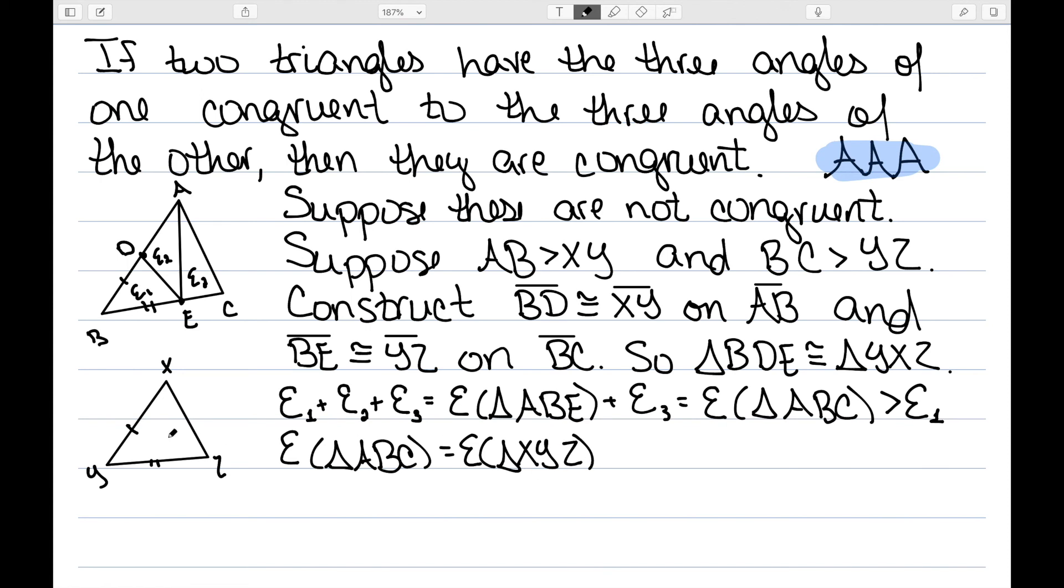However, the triangle of XYZ, since it's congruent to BDE, would have XS1. This would also be XS1, since these two triangles are congruent. And now I have a contradiction. I have the excess of triangle ABC being greater than E1 and equal to E1. So I'm done.